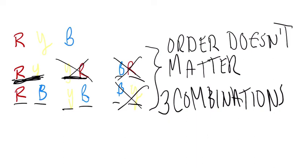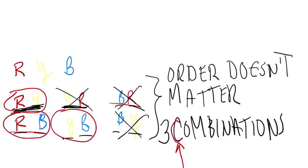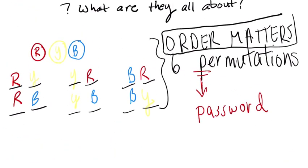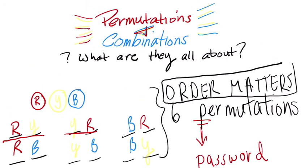To remember combinations, use the letter C and think of mixing color. When you're mixing color, the order in which you mix usually doesn't matter — if I mix red and blue or blue and red, as long as it's one part each, either way I get purple. So combinations are about situations where order is irrelevant; only the groups matter. These groups have different elements in them. Whereas for permutations — think passwords — order matters. Red-yellow is different from yellow-red because the order in which they appear is different. Order matters for permutations.